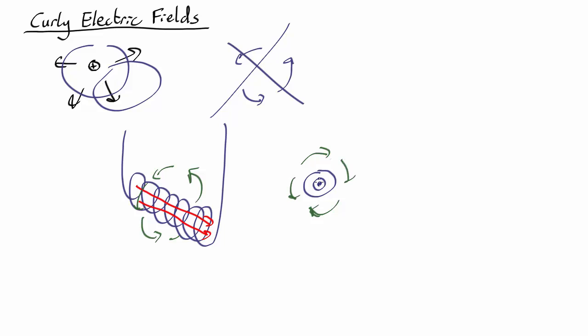If, on the other hand, you have the magnetic field pointing out of the screen but it's getting weaker, then the electric field reverses and points this way.